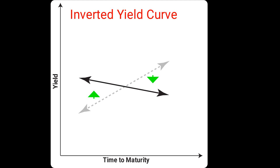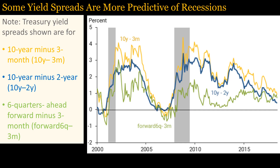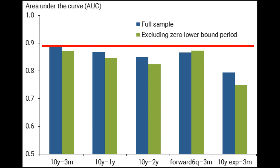As the news always points out, an inverted yield curve predicts recessions, since recessions always follow an inverted yield curve. Some yield spreads are more predictive of recessions. Spreads using the forward rate minus the 3-month rate seem to be the best predictors of recessions, but the 10-year yield minus 3-month yield is also nearly as good. The 10-year yield minus the 2-year yield is also pretty good, and I will use this spread because there is more information going back further in time. This bar chart shows there's not a lot of difference among the different yield spreads in predicting recessions.